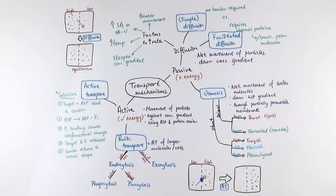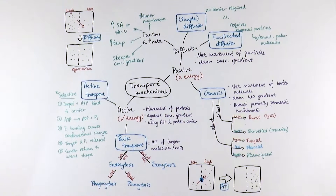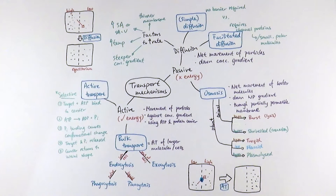This video summarizes the different types of transport mechanisms that you need to know in AS. The MyMap is quite busy with a lot of content, however I've made separate videos detailing certain mechanisms — one on diffusion, one on active transport, and one on osmosis. This video gives you an overview of the different types of transport mechanisms for quick revision.